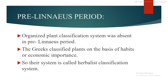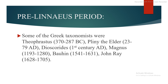In the pre-Linnean period, an organized plant classification system was absent. The Greeks classified plants on the basis of their habits or economic importance, so their system is called the herbalist system of classification. Some of the Greek taxonomists were: Theophrastus (370–287 BC), Pliny the Elder (23–79 AD), Dioscorides (1st century AD), Magnus (1193–1280), Bauhin (1541–1631), and John Ray (1628–1705).